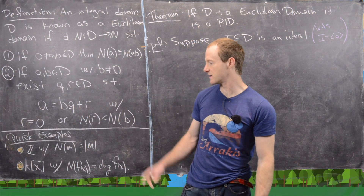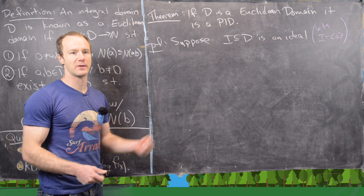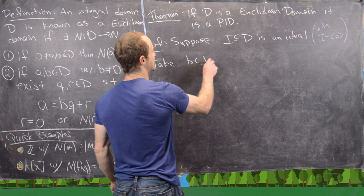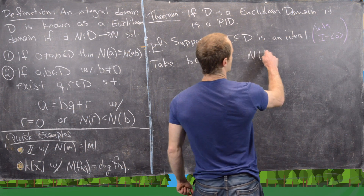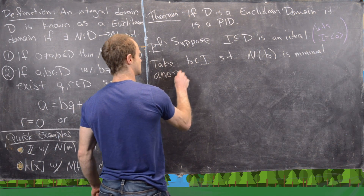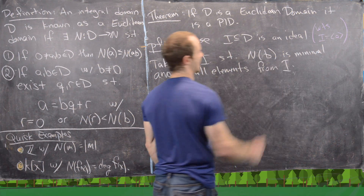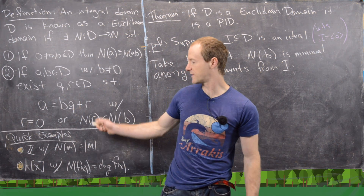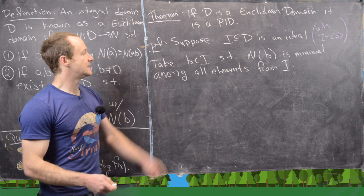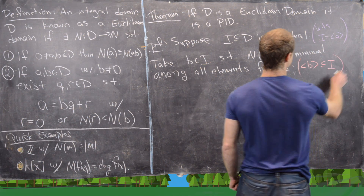The structure of this proof parallels how we proved integers and polynomials are PIDs. The first thing is to take some element b in I such that the norm of b is minimal among all elements of I. We then immediately have the principal ideal generated by b is a subset of I; now we need to show the reverse inclusion.